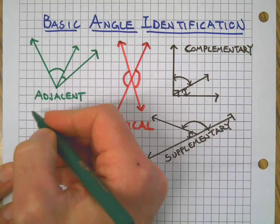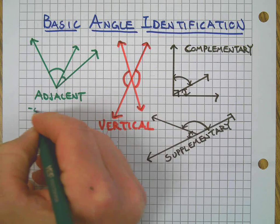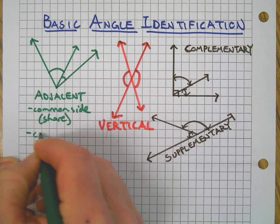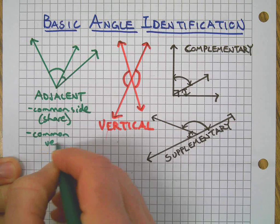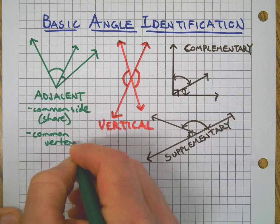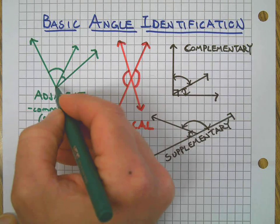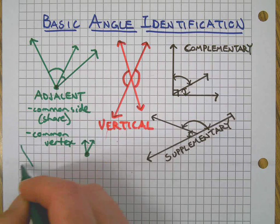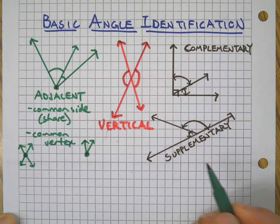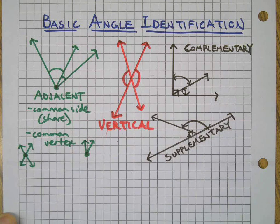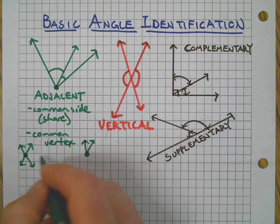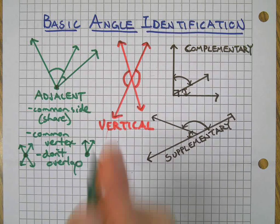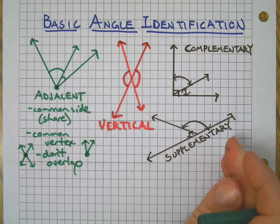First, let's talk about adjacent angles. They have three characteristics: they have a common side, which means they share a side; they have a common vertex, which is the point where two rays or lines meet; and the third characteristic is they do not overlap.